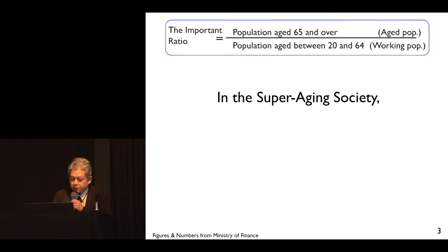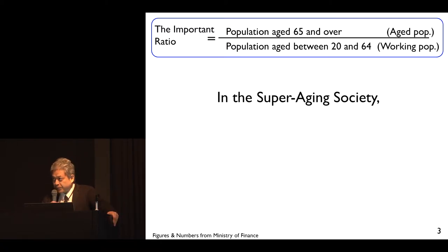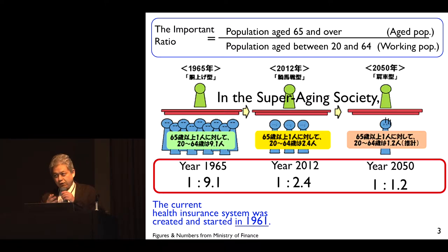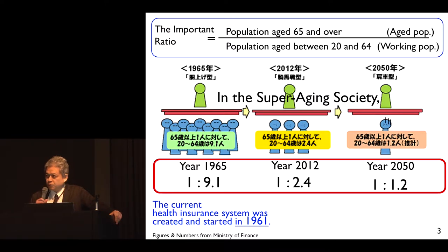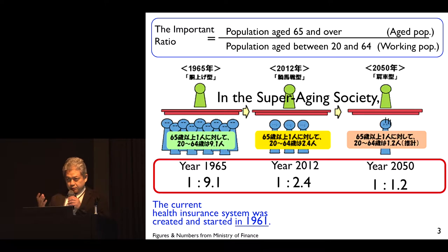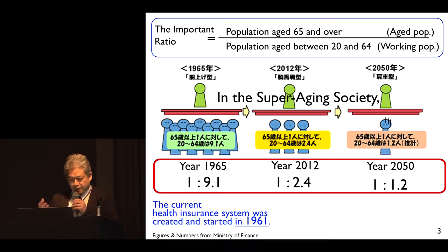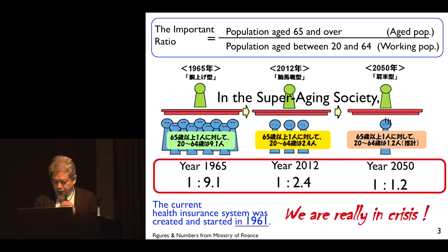In our super-aging society, this is a kind of dependency ratio, and the ratio of aged population to the working population is very important. When our health insurance system was created and started, this ratio was one versus nine — nine people supported one elderly person. But now that ratio is 1.2 and it is approaching 1.1. For financial sustainability of our health insurance system, including our universal health coverage, it is very important. We are really in crisis.